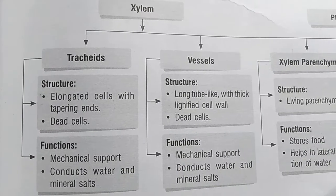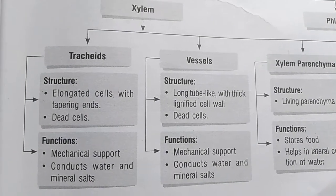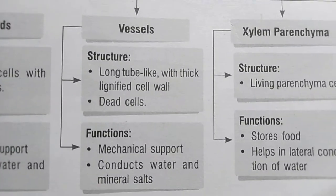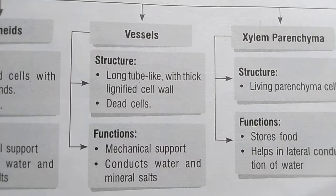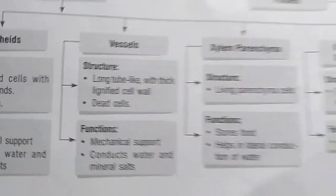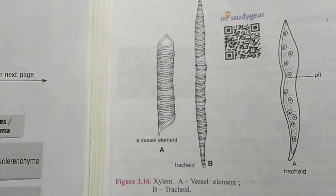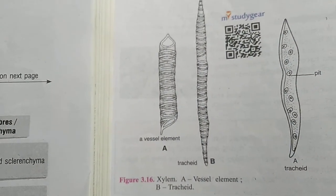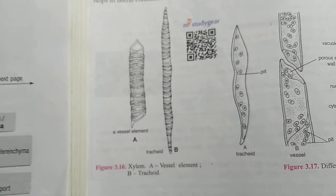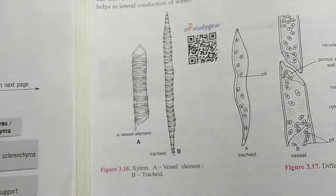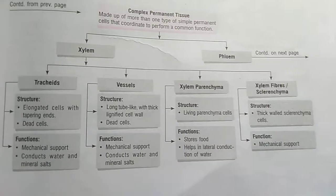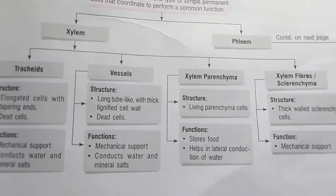The next part of xylem is vessels. Vessels have a long tube-like structure with a thick lignified cell wall — that means the cell wall contains lignin. These are dead cells. The function of vessels is to provide mechanical support and to conduct water, minerals, and salts.